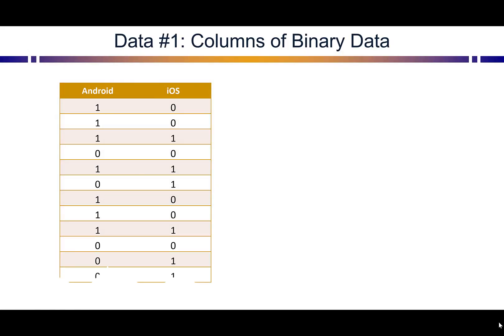One way the data could be shown is as raw data. On our left here, we have 100 randomly selected Android users, and a 1 means they turned on this feature. A 0 means they didn't turn it on. On the right column, we have 100 randomly selected iOS users. Again, a 1 means they turned on the feature, and a 0 means they didn't turn it on.